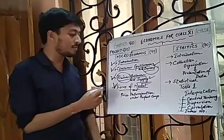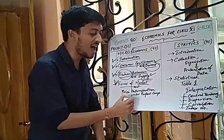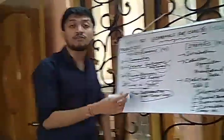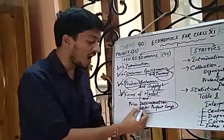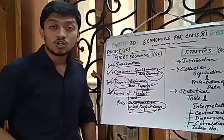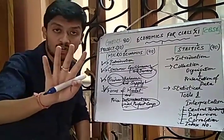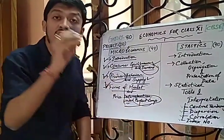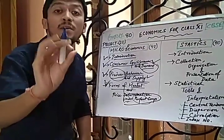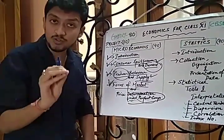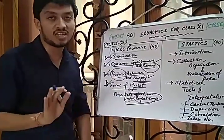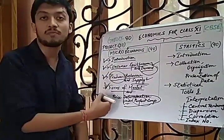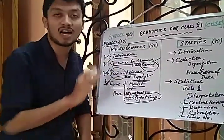The last topic in Microeconomics is price determination under perfect competition. I want all viewers to focus here. Though we learn four types of market, we need to understand how a producer under perfect competition recognizes and determines the equilibrium price. There are very interesting illustrations in this chapter, which is why it is placed last.